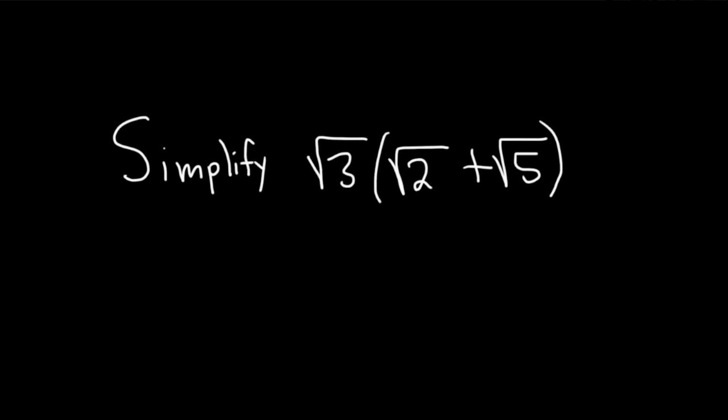Hi, in this problem we are asked to simplify. Basically, that means perform the multiplication. So we have the square root of 3 times, and then parentheses, the square root of 2 plus the square root of 5.